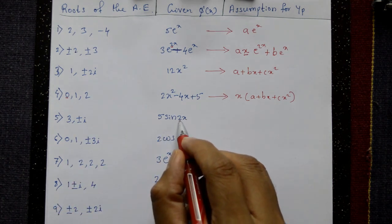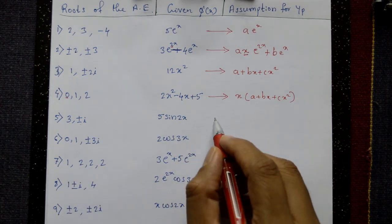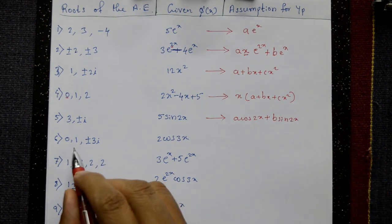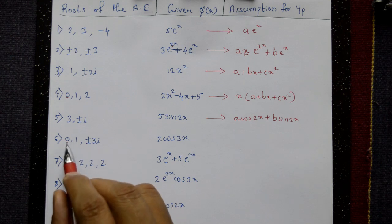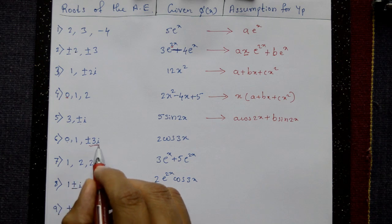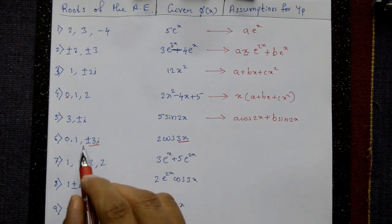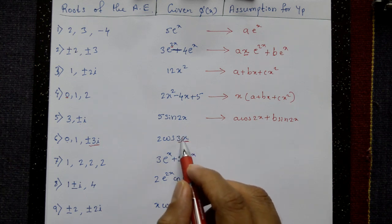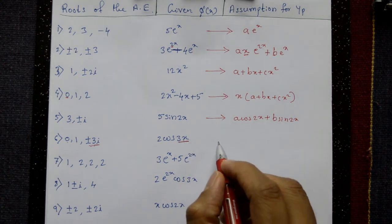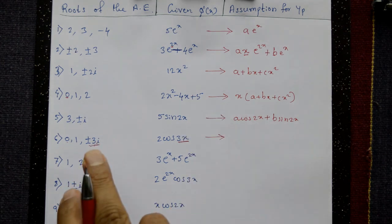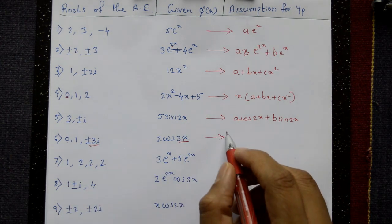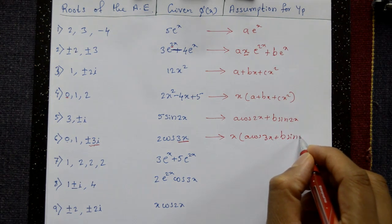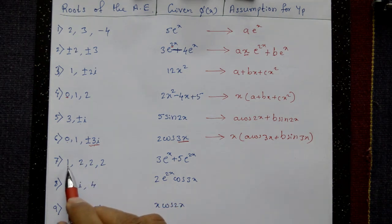Example 5: roots are 3 ± i, and φ(x) = 5·sin(2x). Since ±i is not ±2i (not present in the auxiliary equation roots), assume yp = A·cos(2x) + B·sin(2x). Example 6: roots are 0, 1 ± 3i, and φ(x) involves cos(3x) or sin(3x). Since ±3i appears in the auxiliary equation roots, multiply by x one time: assume yp = x·[A·cos(3x) + B·sin(3x)].